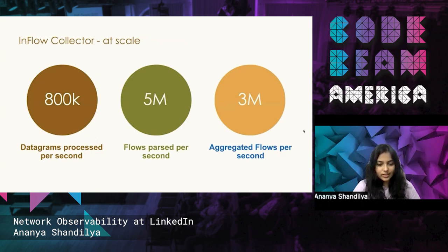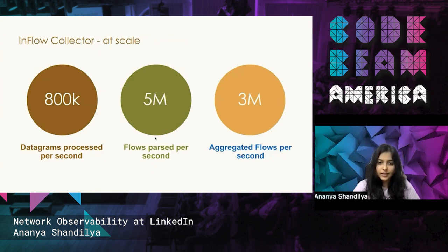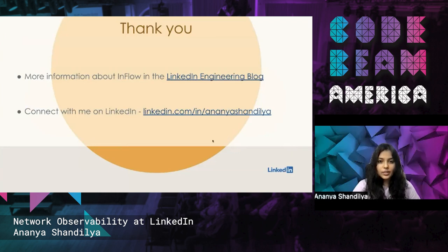To conclude, we have various clusters of the Inflow collector running today, and we are able to process 800,000 datagrams per second. Since one datagram can have multiple flows, this amounts to around 5 million flows parsed by the Inflow collector every second. Our aggregation system — the sample aggregator — is able to aggregate these 5 million flows to 3 million flows per second, and 3 million messages is what we are publishing to Kafka. Thank you everyone for joining me.